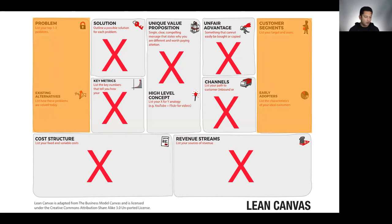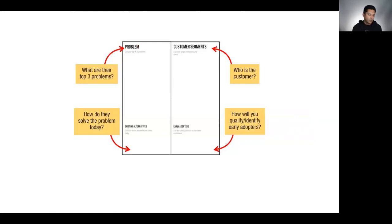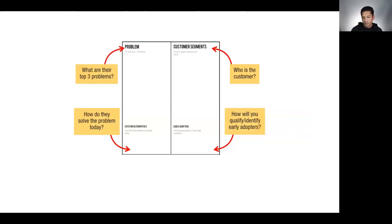Those two pillars — the customer and the problem — are where I always start. When I look at any lean canvas, I want answers to four fundamental questions: Who is the customer? How big is the addressable market — is it big enough where you can build a sizable business? And I won't give a specific number because there are problems of all sizes — you may build a billion-dollar business, a hundred-million-dollar business, or a ten-million-dollar one. Someone may just want to quit their day job, and that's perfectly valid. But you have to start with that goal in mind.